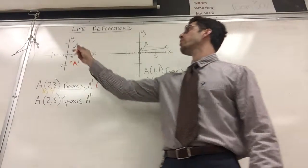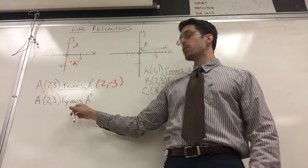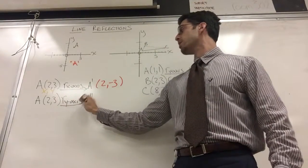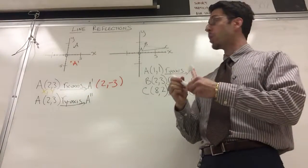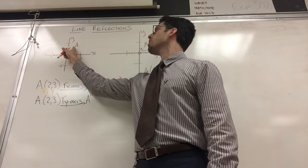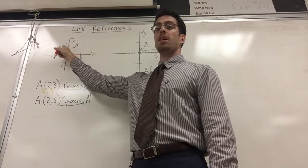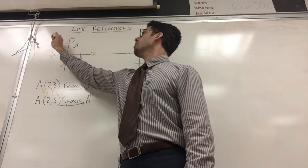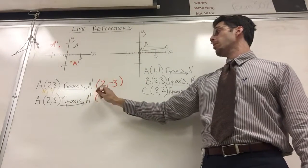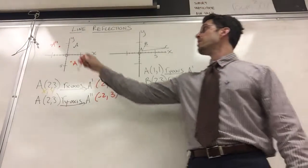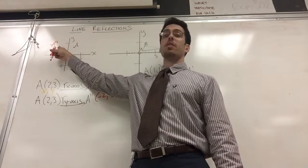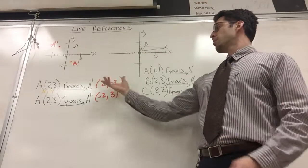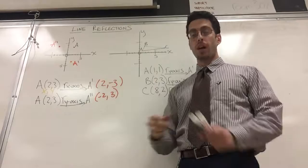Well I never left two. I was on two the whole time. Two stayed the same but the three became negative three. That's what happens when you reflect in the x-axis. What if I was going to reflect in the y-axis? What happens to two comma three if instead of going the x-axis I reflected into the y-axis?